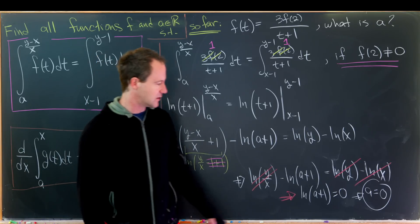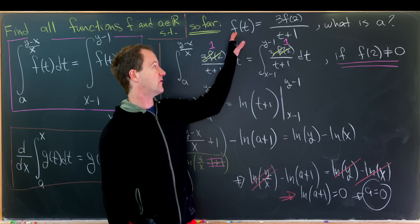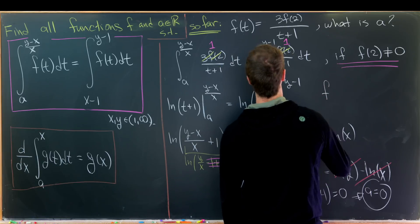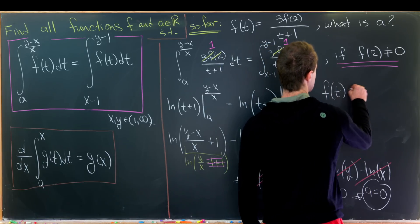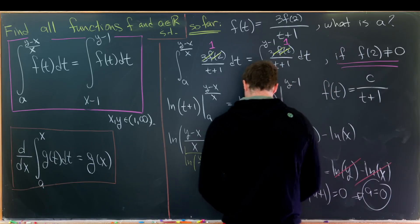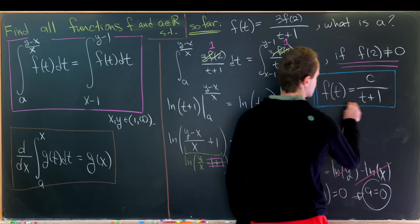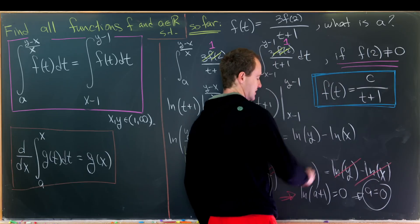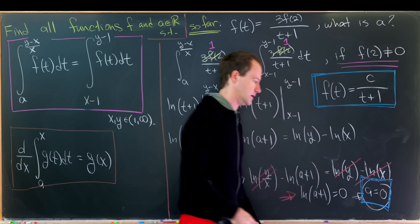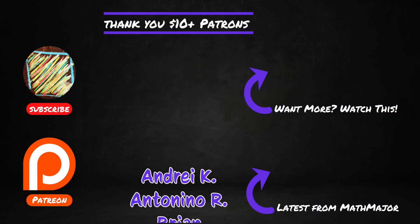In the end, we've determined our number a and our function. We have a whole family of functions: f(t) equals c/(t+1), where c is any constant. Our final solution is f(t) = c/(t+1) and a equals 0.